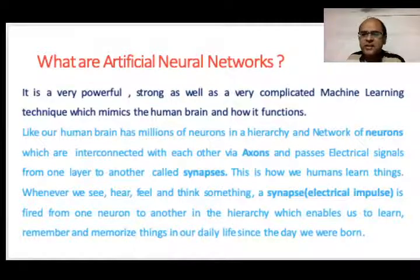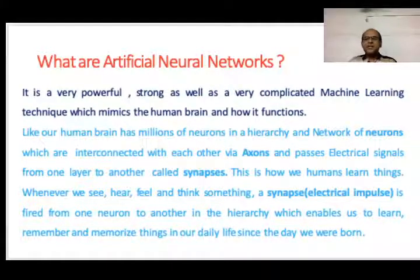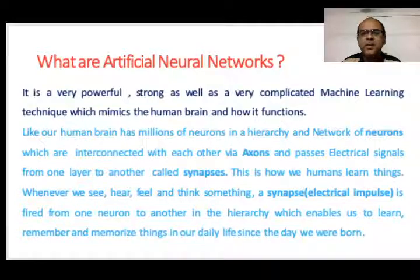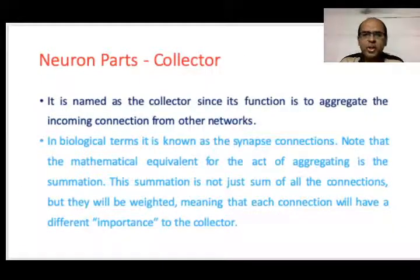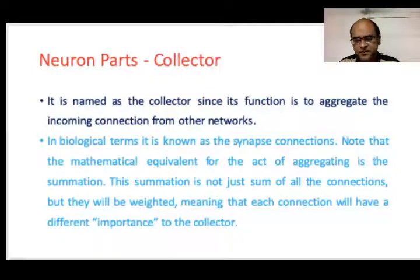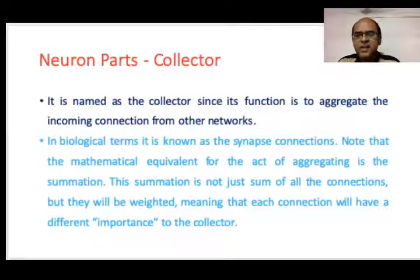This is how humans learn things. Whenever we see, hear, feel, or think, an impulse or synapse is fired from one neuron to another, enabling us to learn, remember, and memorize things from day one since we were born. The first part of the neuron is called the collector — its basic function is to aggregate incoming connections from other networks. In a biological neuron it is known as the synapse connection, and the mathematical equivalent for aggregation is summation.